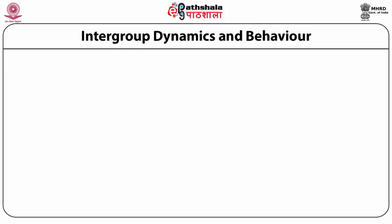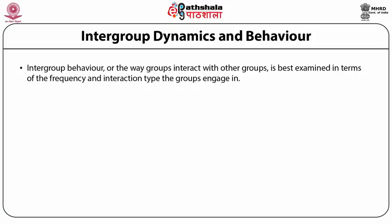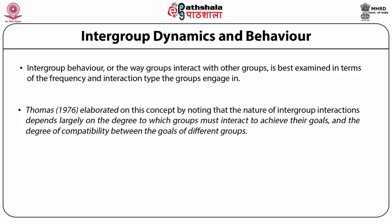Let us come to the next stage — understanding intergroup dynamics and behavior. Intergroup behavior, or the way groups interact with other groups, is best examined in terms of the frequency and type of interaction. In 1976, Thomas elaborated on this concept by noting that the nature of intergroup interactions depends largely on the degree to which groups must interact with each other to achieve their goals, and the degree of compatibility between the goals of different groups.